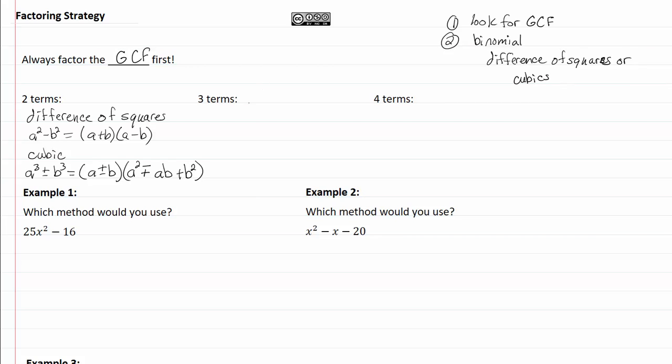Three terms, it's going to be a trinomial, and basically there we're going to do trial and error. Or if you remember the formula, you could have a perfect square trinomial. So third, we're going to put down trinomial, and we're going to say trial and error.